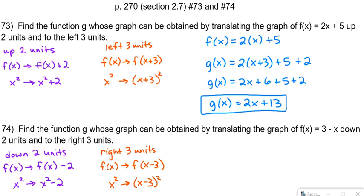Okay, similarly for problem number 74, we're starting with our f of x. Let's just put some parentheses around the x. f of x equals 3 minus x. And so g of x is what we get when we do the right shift. So when we change from x to x minus 3.